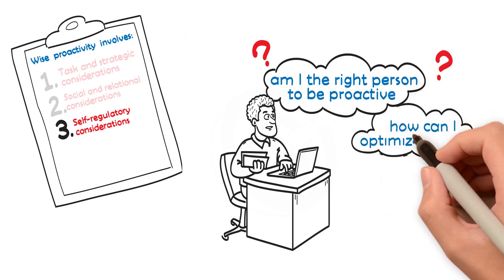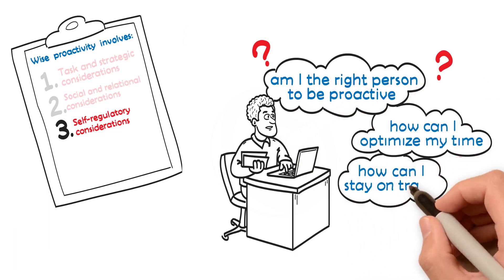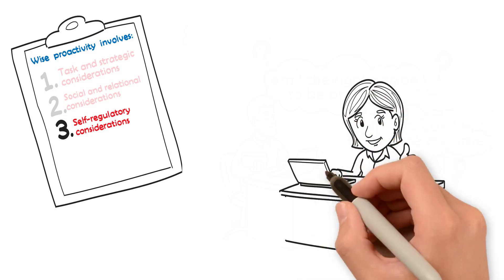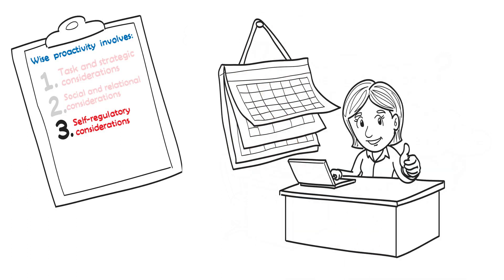How can I optimize my time to achieve this proactive goal effectively? How can I stay on track if things go awry? The more one's proactivity considers one's self, the more likely it can be sustained as people would have the ability and persistence to carry it through.